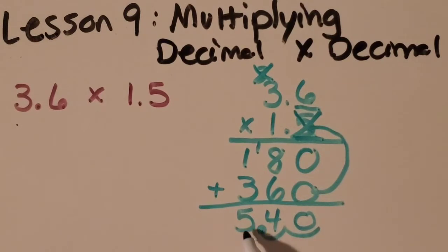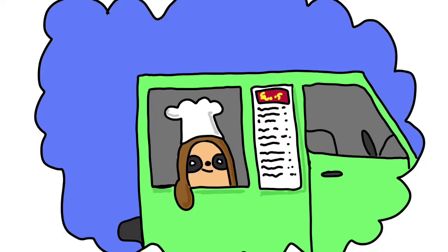So my answer is 5 and 40 hundredths or 5 and 4 tenths. Well let's check in with Henry the sloth to see how his business is going. If you've been watching my videos you know that we've been following the story of Henry the sloth and his food truck business.